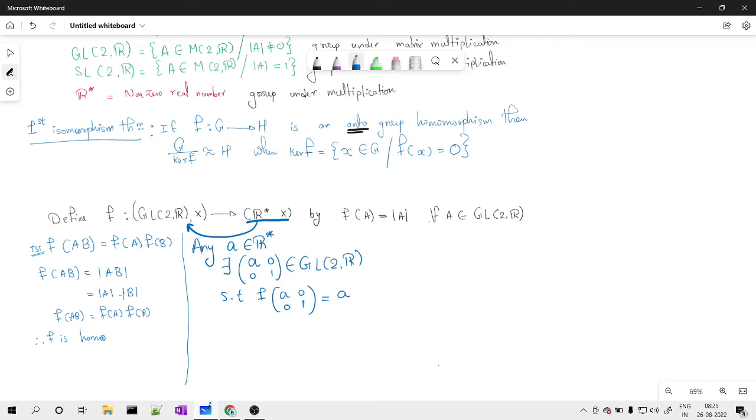Also, this is not equal to zero since my a is not equal to zero. The determinant came out to be a which is not equal to zero, hence it is an element of GL(n,R). Since my f is an onto homomorphism, by First Isomorphism Theorem...